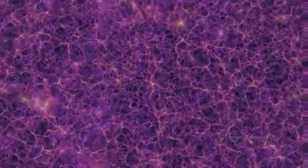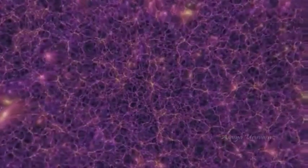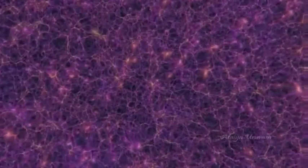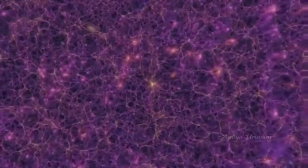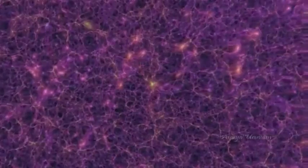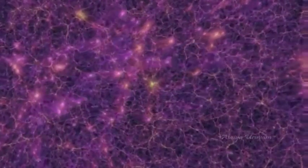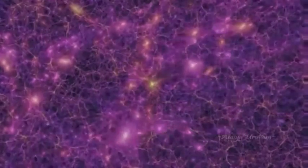Take for example this incredible image of a supercomputer simulation known as the Millennium Run, showing the distribution of dark matter in the local universe. It was created by the Max Planck Society in Germany. Dark matter is essentially what we previously thought of as empty space.